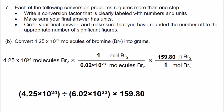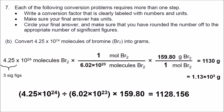Our calculator gives us 1128.156. Since the number we started with has 3 significant figures, our answer should be rounded off to 3 significant figures. We can do this in one of two ways, and either is correct: we can write 1130 with no decimal — the final zero is not significant because a decimal is absent — or we can write this in scientific notation as 1.13 times 10 to the 3rd grams. Either one is acceptable.